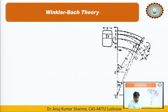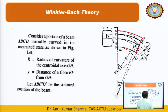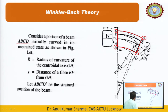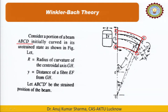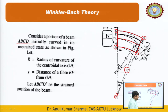Let us consider a curved beam. We have taken a small initial segment of this beam: a portion ABCD. Let r be the radius of curvature of the centroidal axis GH. This centroidal axis has a center of curvature O. We have then considered a fiber EF at a distance y from GH — just as in simple bending, we consider a fiber at a distance y from the neutral axis.